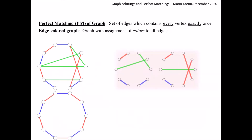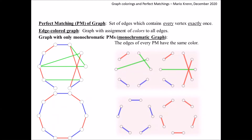Let's take another example, this time with two colors. It also has two perfect matchings, and each of the perfect matchings has only one color — the left one has only blue edges and the right one has only red edges. We can call such perfect matchings monochromatic. This is a very special property and at the heart of the question we are interested in. Therefore, let's give such graphs a name: we will call graphs with only monochromatic perfect matchings a monochromatic graph.